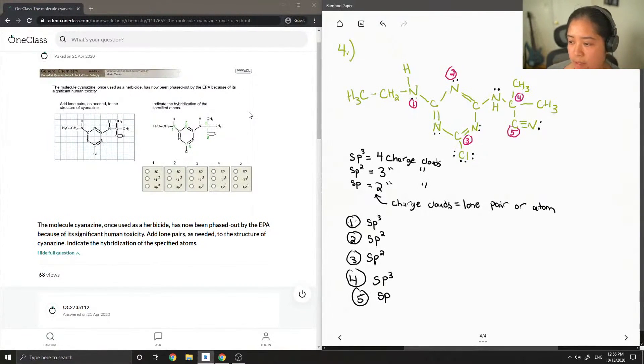So another thing I notice if you don't want to do this charge cloud way is that basically if there's single bonds involved, it's SP3. With double bonds, it's SP2. And with SP, it's triple bonds.